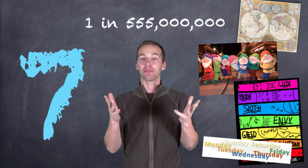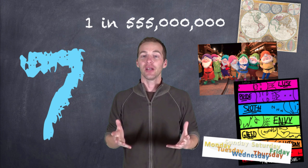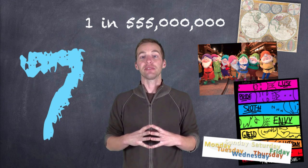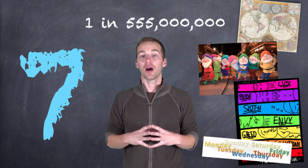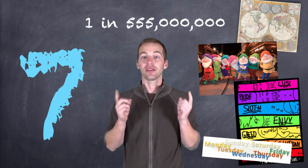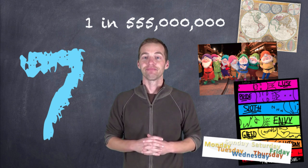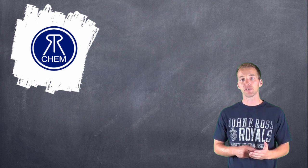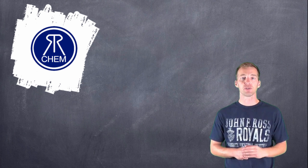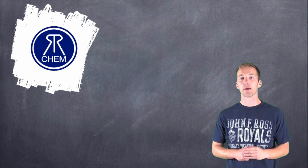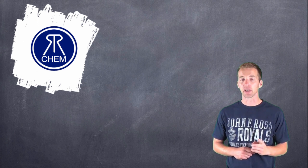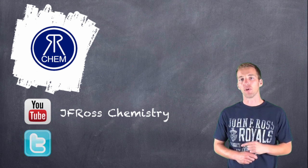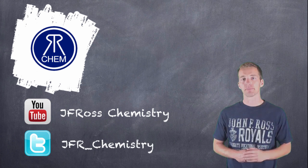Back to our number seven and our relationship: if somebody ever tells you you're one in a million, you're still 555 times more common than finding a hydrogen ion in a sample of water. Thanks for watching! If you're looking to watch this video again or find additional videos on chemistry topics you've been covering in class, check out our YouTube channel or follow us on Twitter.